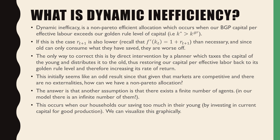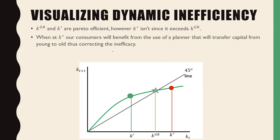In our model — the diamond model — there are an infinite number of agents because it's an infinite overlapping generations model. This occurs when households are saving too much when young by investing too much in capital for goods production. We can visualize this situation graphically. In terms of visualizing dynamic inefficiency, this is where we're at K star, which is just past K golden rule. Our economy would benefit from a planner which will transfer K star back to K golden rule.